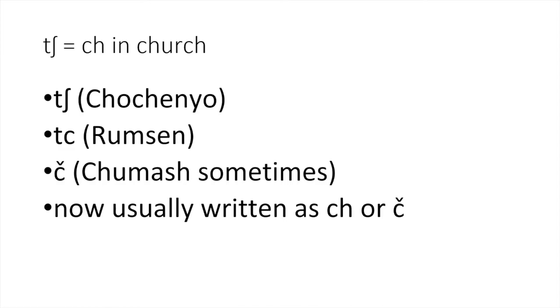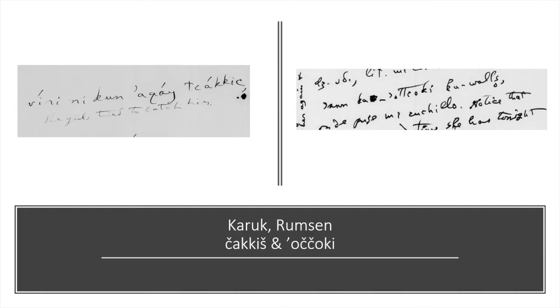So, now let's look at CH. The T-shah will be pronounced as CH, what we know as CH in English. So, there are a lot of variations of how he writes the sound. Usually, he writes it with the T-shah, like, for example, in Chochenyo. Sometimes, he would write it with a TC, like in Rumsun. Or, sometimes, he would write it with a C and a charon on top. And, nowadays, it's usually written as a CH or a C-charon when you look at the modern orthographies.